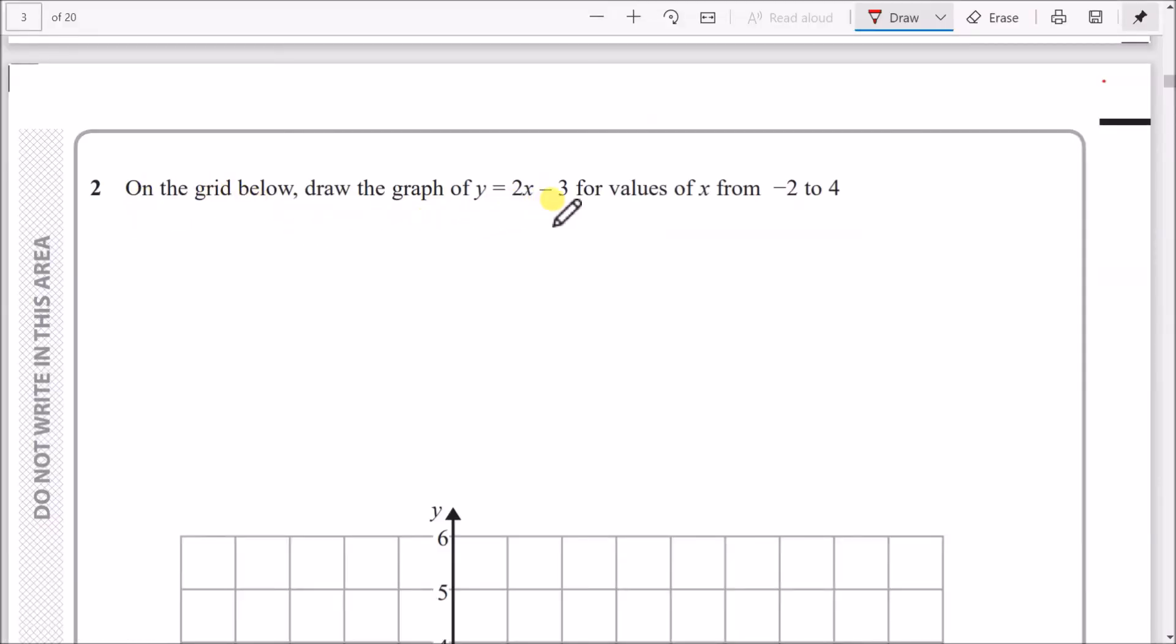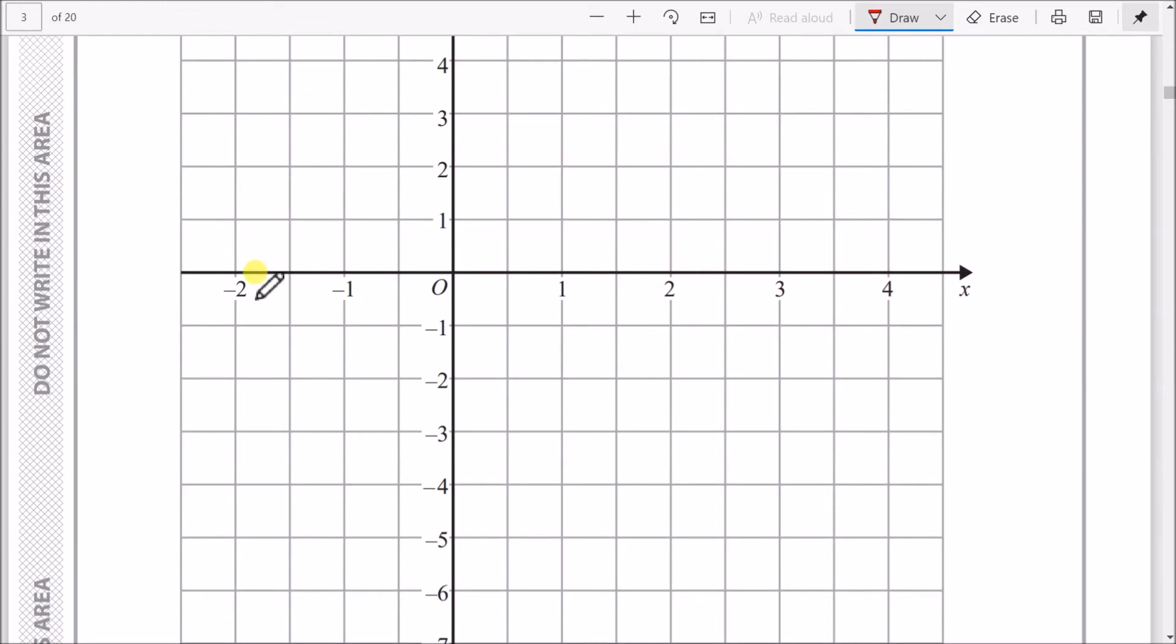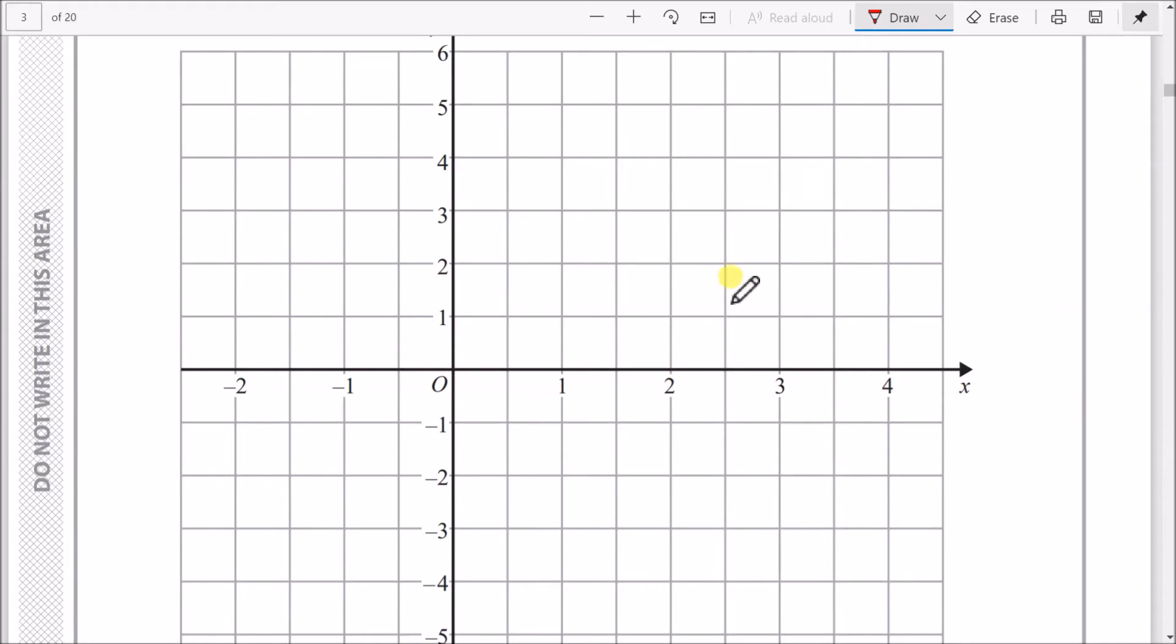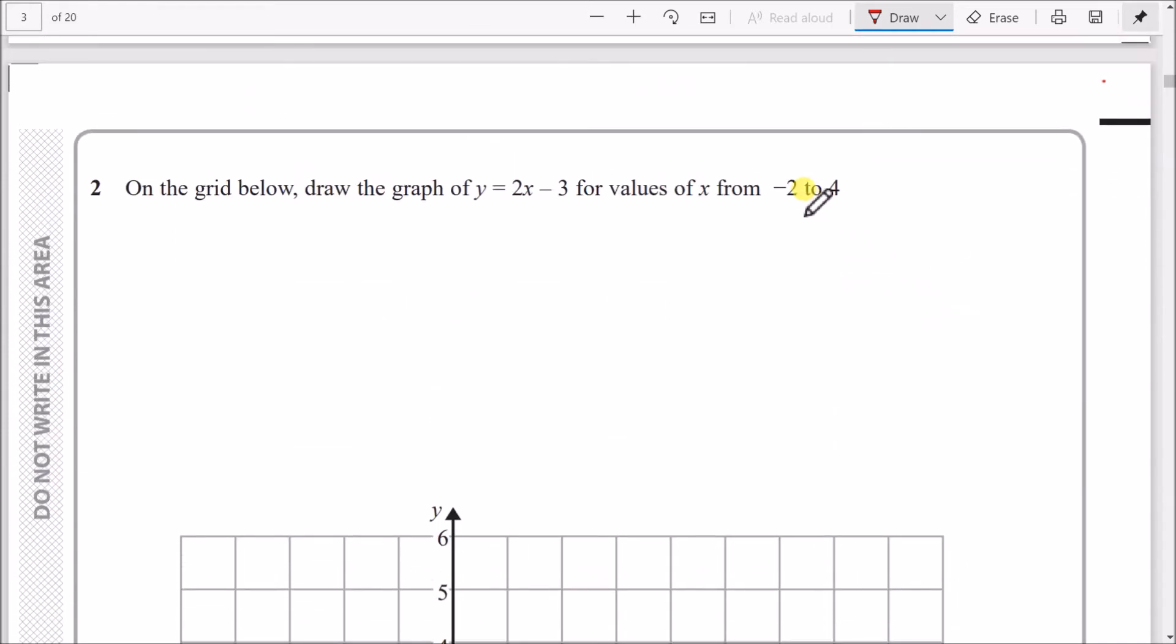On the grid below, draw the graph of y equals 2x minus 3, a straight line for values of x from minus 2 to 4. Pick two random x values—I'll pick the endpoints. When x is minus 2, replace the x coordinate: y equals 2 times minus 2 take away 3. In the calculator, you should get minus 7, so the first coordinate is minus 2 and minus 7.